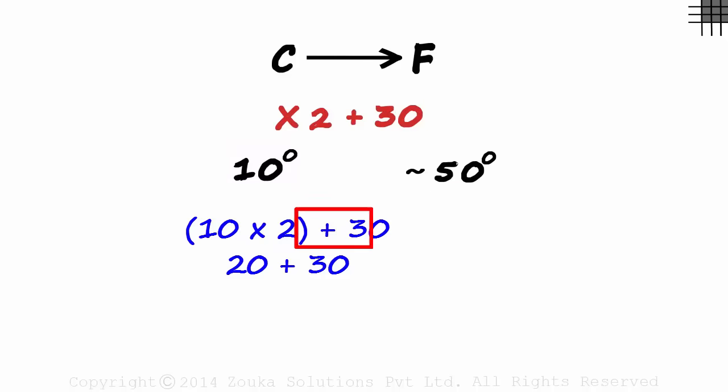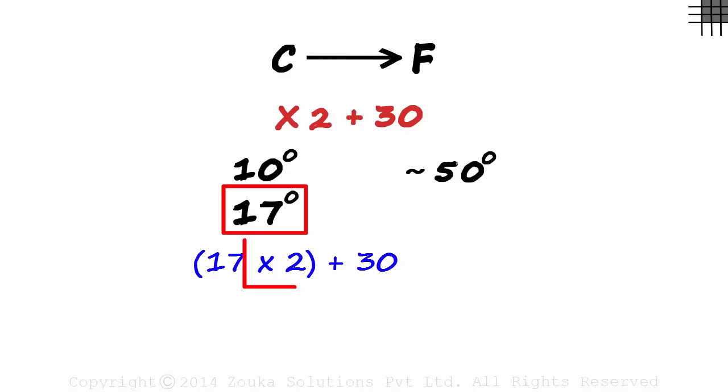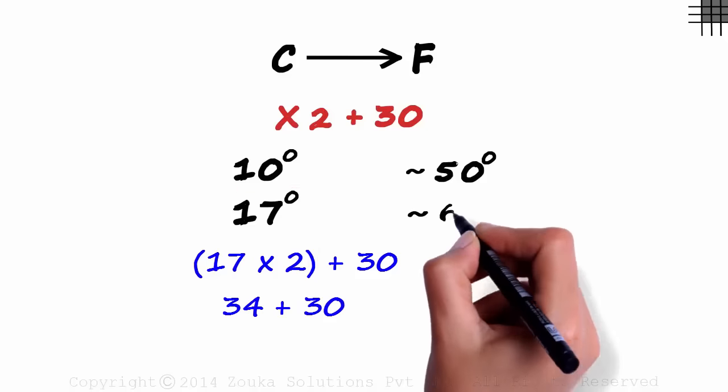Multiply with 2 and add 30 to the product. 17 degrees Celsius. 17 times 2 is 34 and 34 plus 30 is 64.